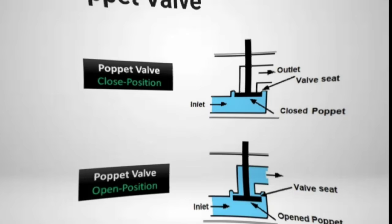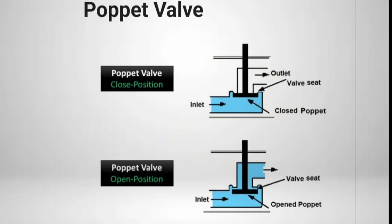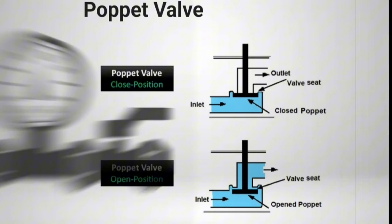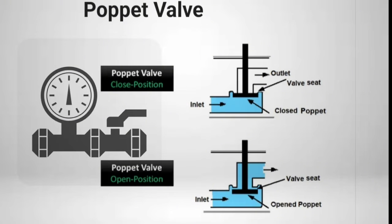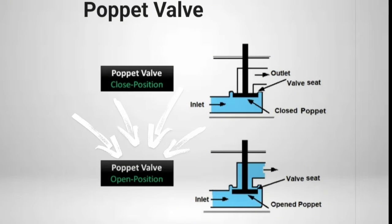The basic construction of a poppet valve comprises a movable poppet that closes against a valve seat. Pressure from the inlet serves to hold the valve tightly closed. A little force is required to the poppet stem that opens the poppet. The action is similar to the internal combustion of an automobile engine.